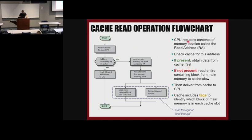Looking at the flow chart: we receive the read address from CPU. Is it in the cache? If yes, it's fast — we have the data, we move it from cache to registers. If it's not there, we access the main memory, move the data to the cache, and from the cache to the CPU. We have to keep in mind that if there's a cache miss, we don't go from main memory directly to the CPU — we always have to go through the memory hierarchy: main memory, third-level cache, second-level cache, first-level cache, then CPU. We use tags to identify blocks of main memory and to check whether a block is in the cache.